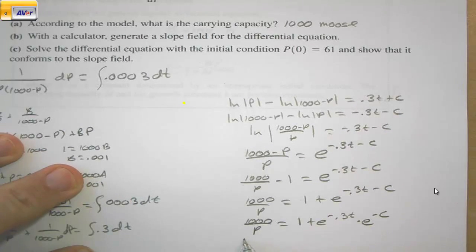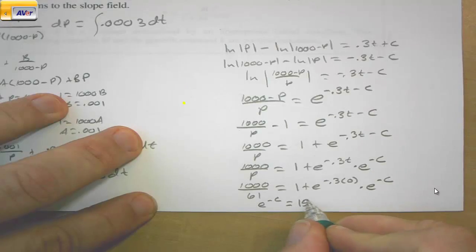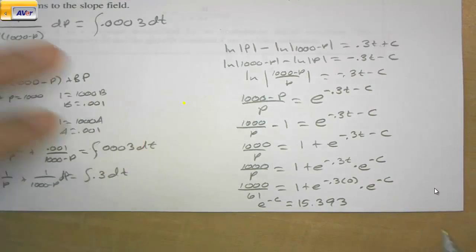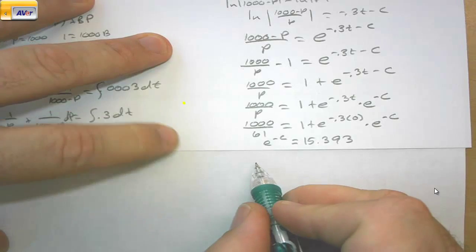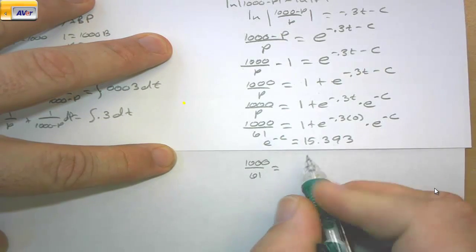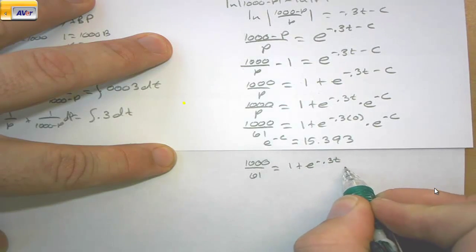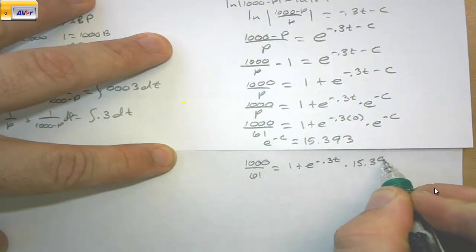Now we can plug 61 in for P. 1000/61 = 1 + e^(-0.3(0)) times e^(-C). And when we solve for e^(-C), we get 15.393. So we have 1000/61 = 1 + e^(-0.3t) times 15.393.